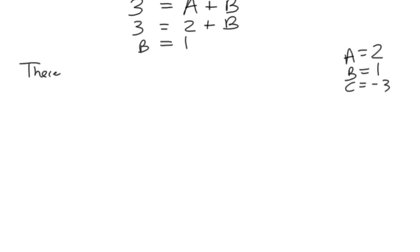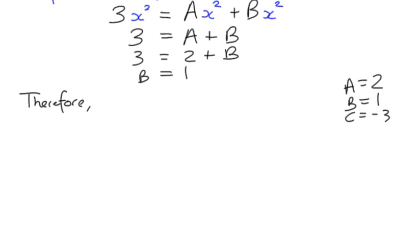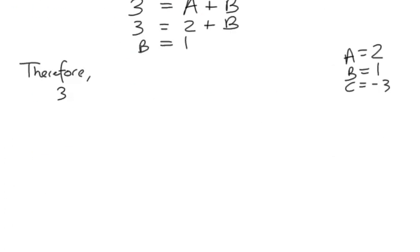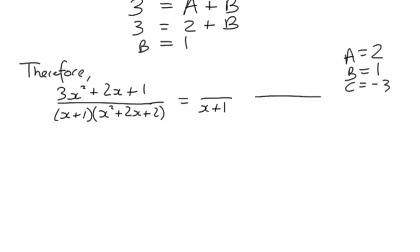Therefore, let's finish with a flourish. The original expression was 3x squared plus 2x plus 1 divided by x plus 1 multiplied by x squared plus 2x plus 2. We were saying our template was something over x plus 1 and something over x squared plus 2x plus 2. So, there's something over the x plus 1 which is the letter A and we know that that is now 2.